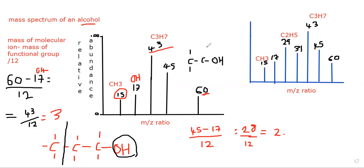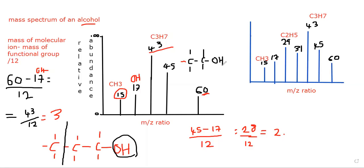Do not add extra hydrogens — that would change the mass. The molecule has to fragment. So checking: 12 plus 12 is 24, plus 4 is 28, plus 16 is 44, plus 1 is 45. Correct.